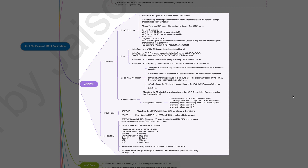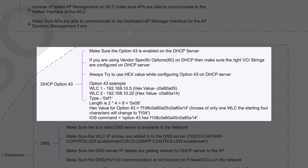In this video I'll be concentrating on CAPWAP-related issues. The first thing is how your network is going to provide information about the WLC to your AP — whether it's coming from factory default settings or any other situation. The AP should be able to find the WLC. When we talk about CAPWAP discovery, the first thing we rely on is DHCP Option 43. Make sure Option 43 is enabled on your DHCP server.